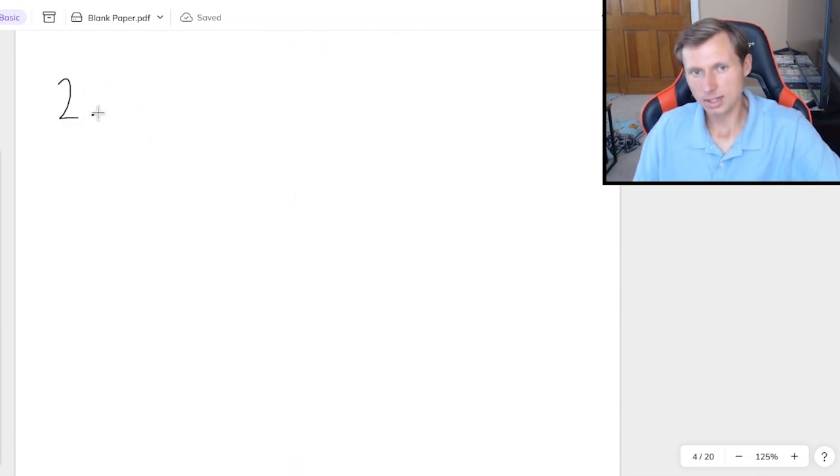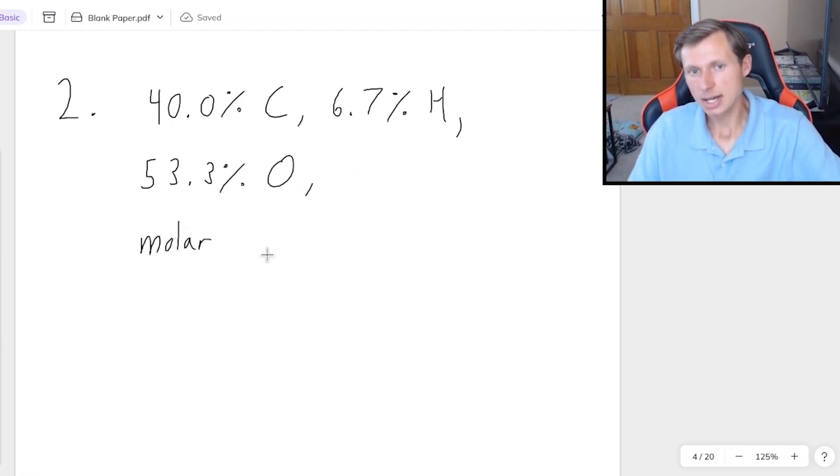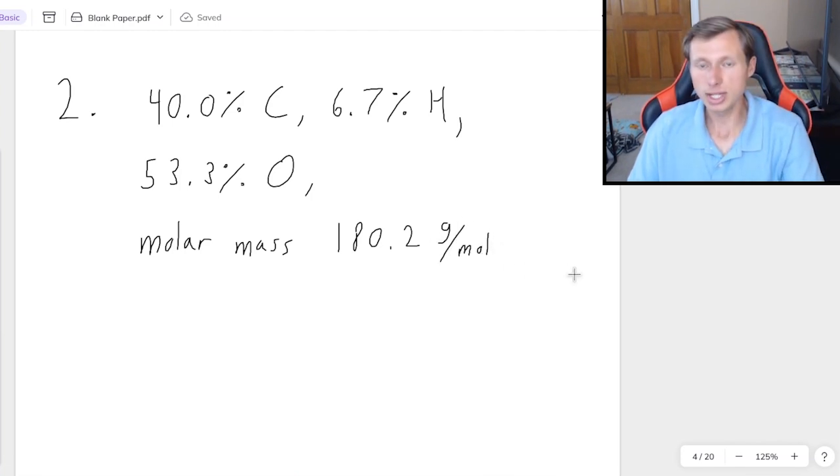So let's do one more. For this one, the compound is 40.0% carbon by mass, 6.7% hydrogen and 53.3% oxygen. And this compound has a molar mass of 180.2 grams per mole. So using that two-step process, see if you can solve this one on your own now. Pause the video and give it a try.